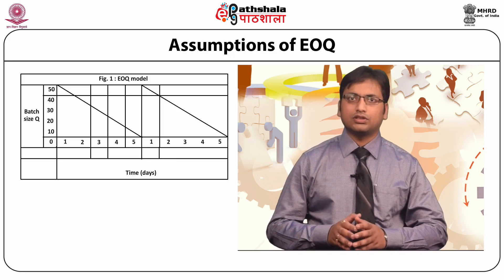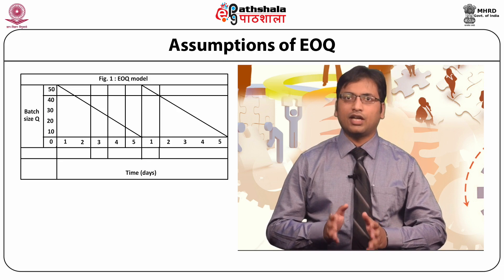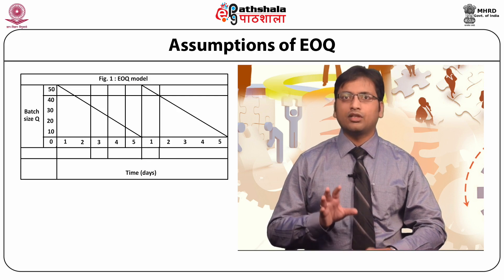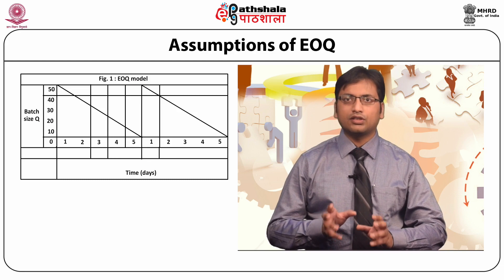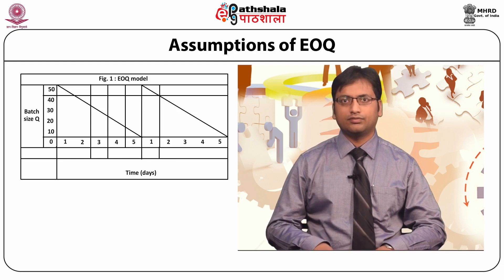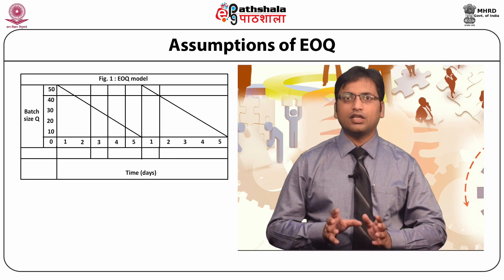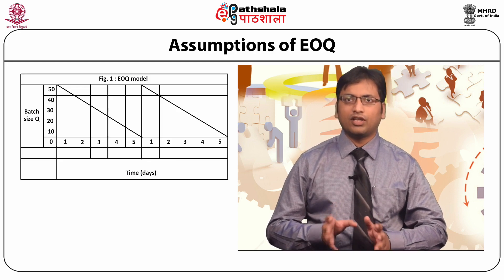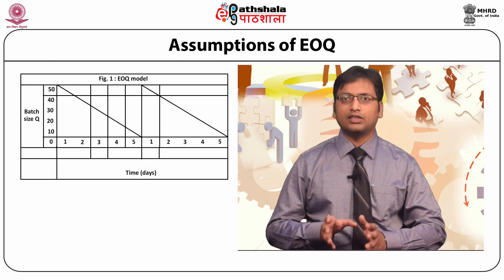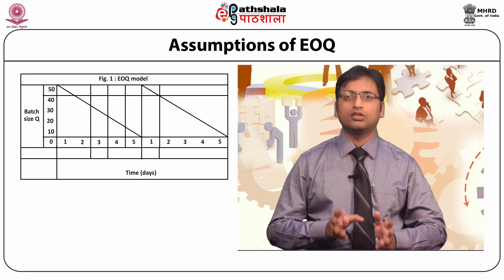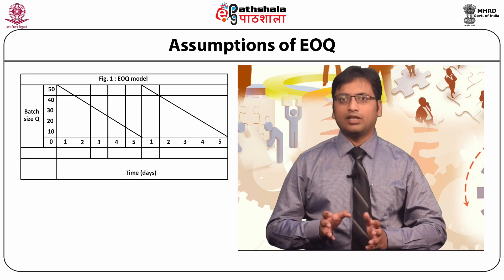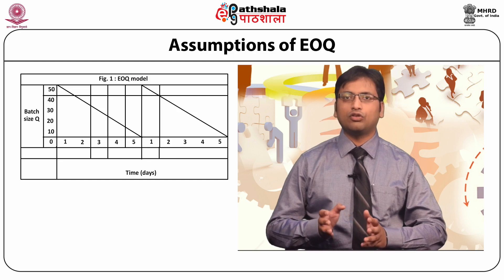As the figure shows, the X-axis represents time and the Y-axis represents batch size. At time T = 0, stock is full with a batch size of Q = 50 units. With each passing day, the batch is consumed at a constant rate of 10 units, and after T = 5 days, the entire batch is consumed, i.e., Q = 0. But at that same point in time, stock gets replenished with the same batch size of Q = 50 units.